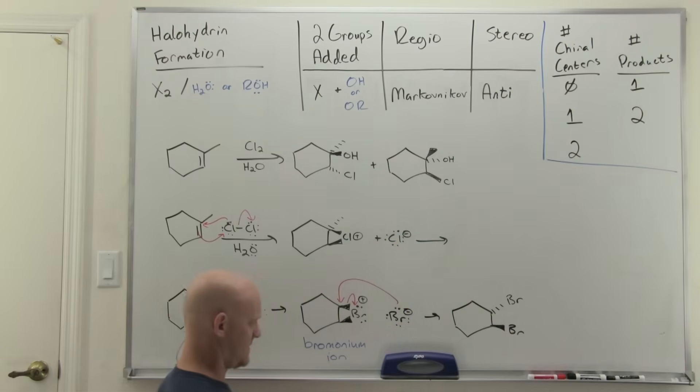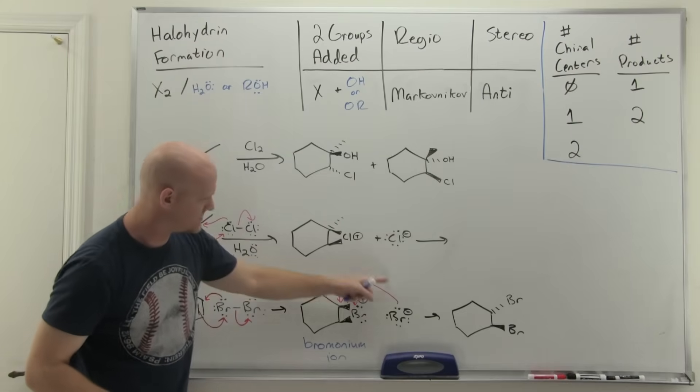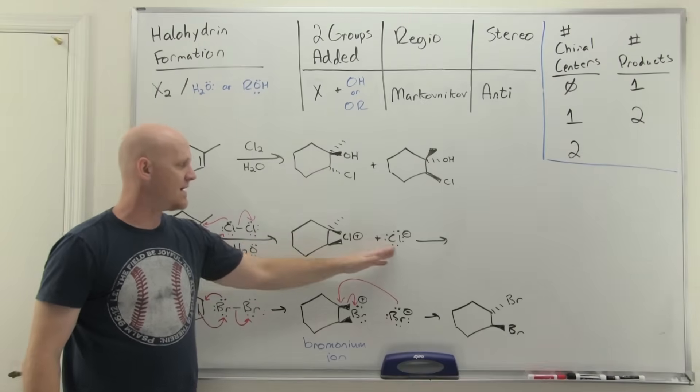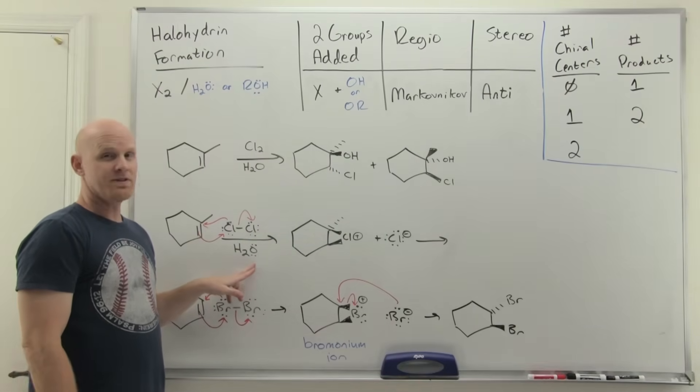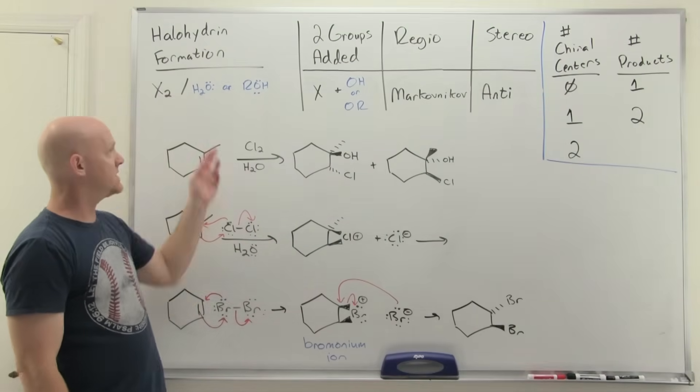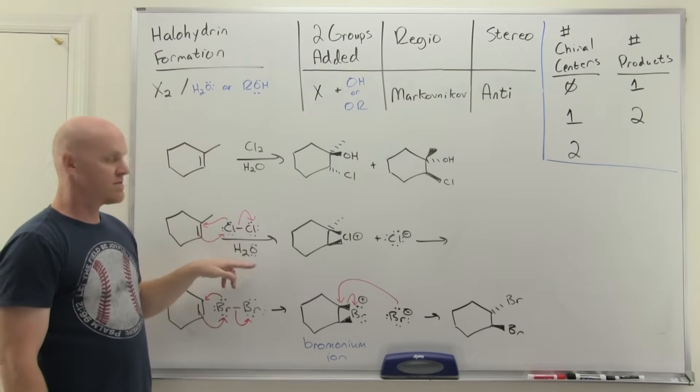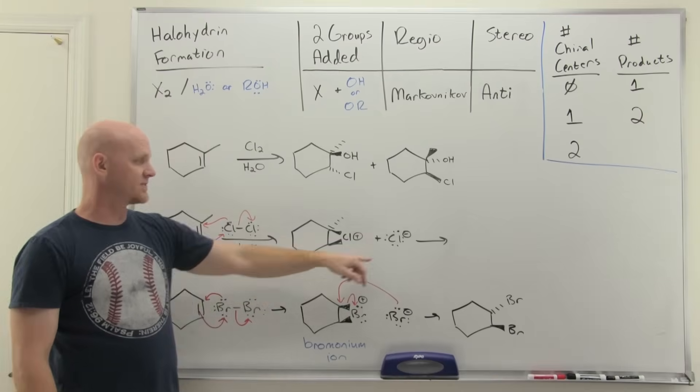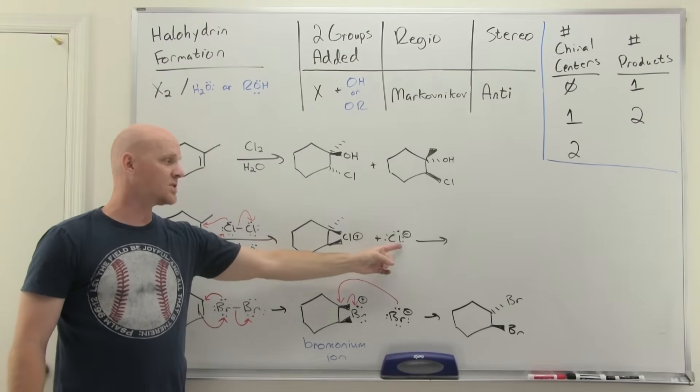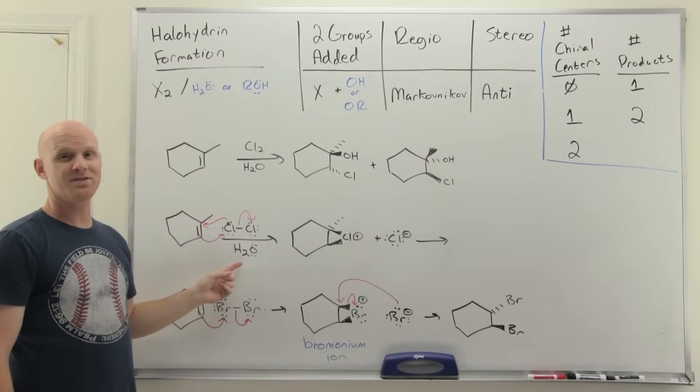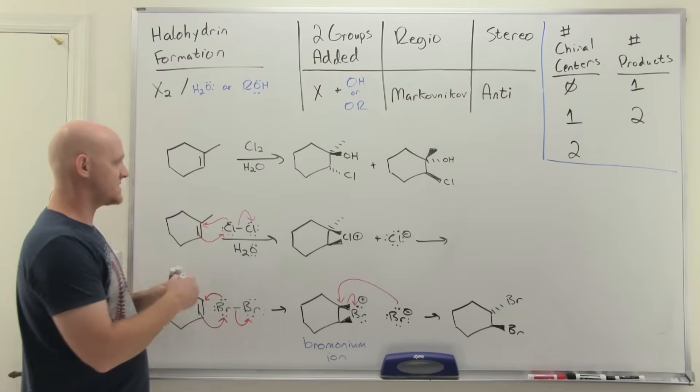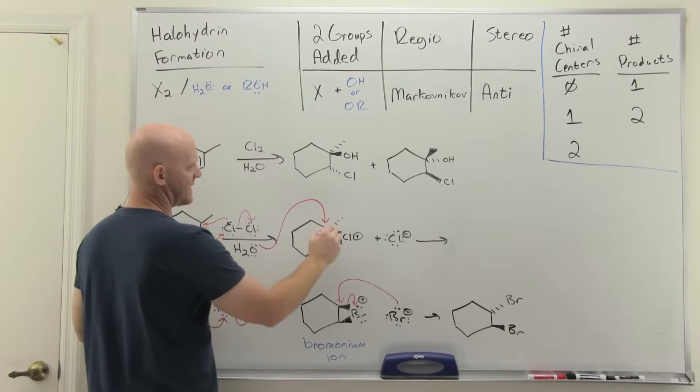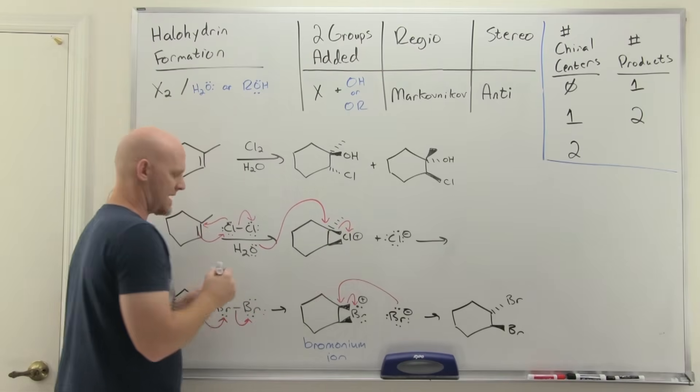Normally, we'd have that chloride come and do backside attack. We said it would be on the more substituted carbon, not the less. However, we used a solvent that's not inert this time around, water. When you use water or alcohol, they are actually weak nucleophiles. In this case, they're weak nucleophiles. Chloride's a better nucleophile. But there's only one chloride and he's the solvent. There's millions and zillions of them. As a result, the solvent preferentially gets to do the backside attack instead and open up that ring.